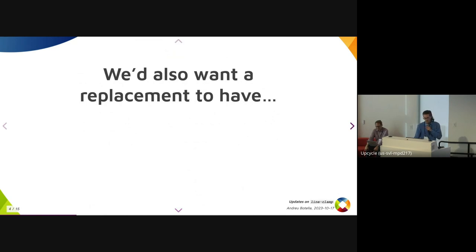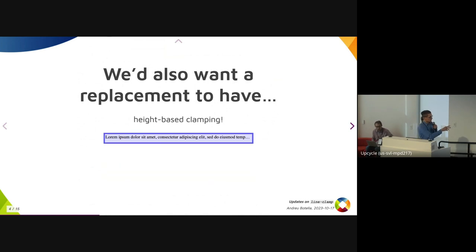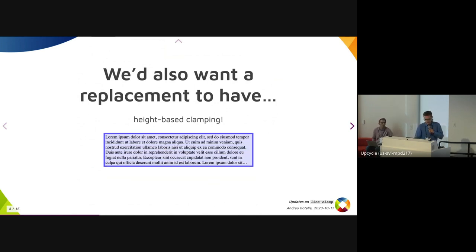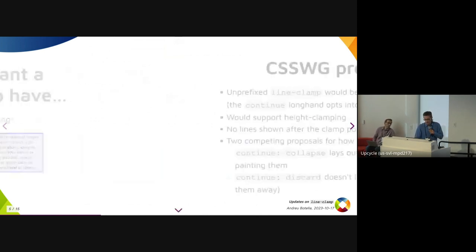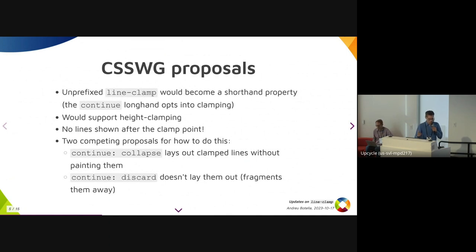If we're going to replace this, we want a replacement to also have height-based clamping where it computes the number of lines automatically based on the height. There are a couple of CSSWG proposals about this — like line clamp without the prefix would be a shorthand property which supports height clamping, and no lines will be shown after the clamp point. There are two proposals.